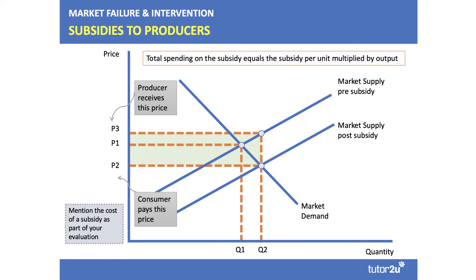Subsidies — there are lots of subsidy diagrams. The crucial point to take away is that the best answers show the effect on price and quantity. The price here goes down from P1 to P2 with the subsidy, so the consumer pays P2. The producer gets P2 plus the subsidy, so the producer actually gets price P3. The green area here shows the total cost of the subsidy to the government. It's always worth mentioning the cost of a subsidy as part of your evaluation.